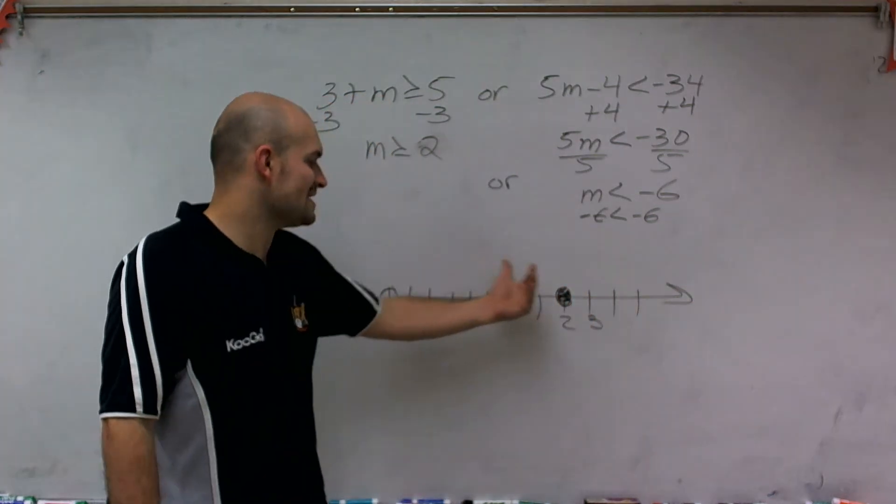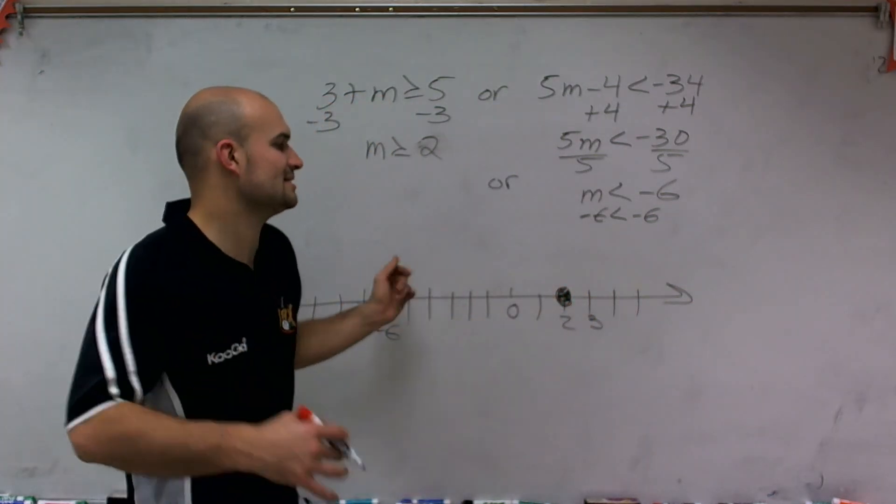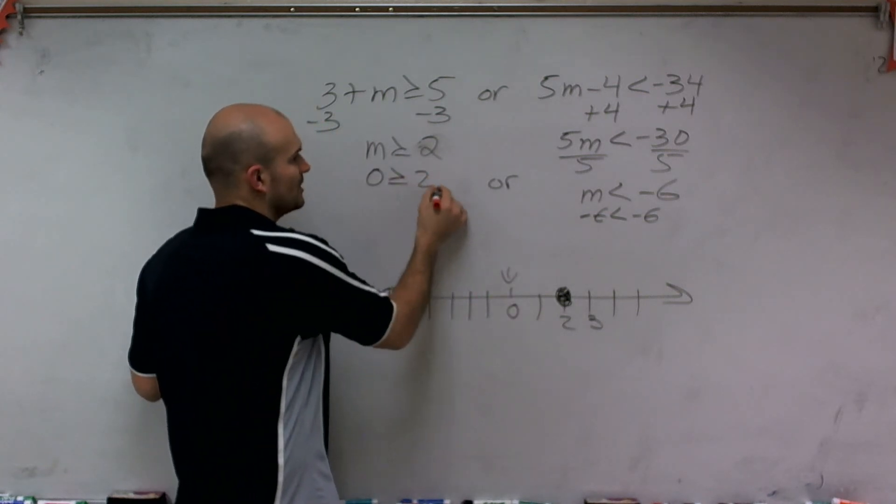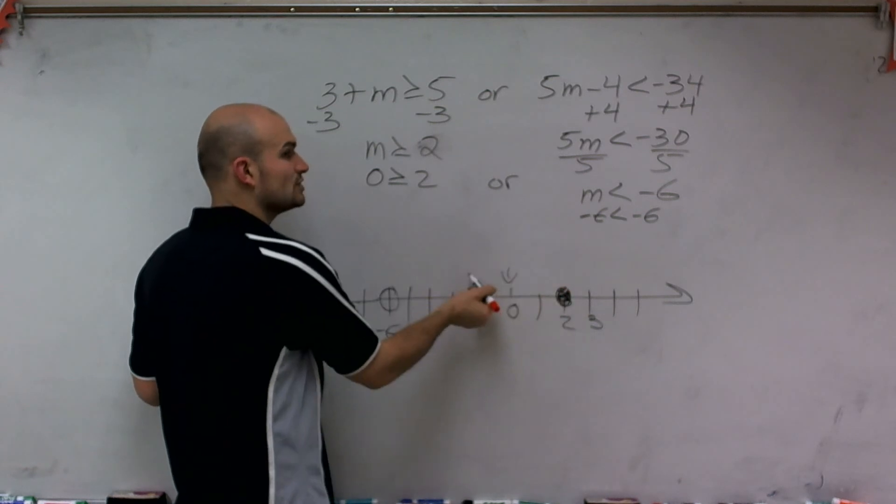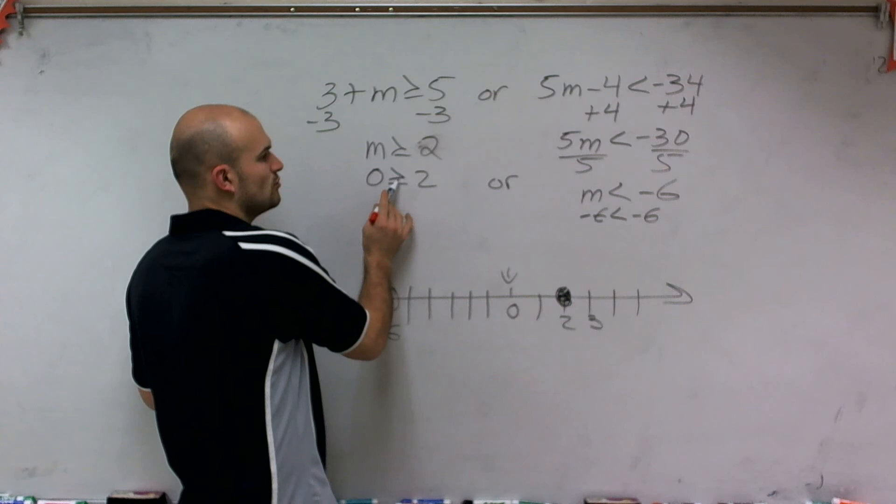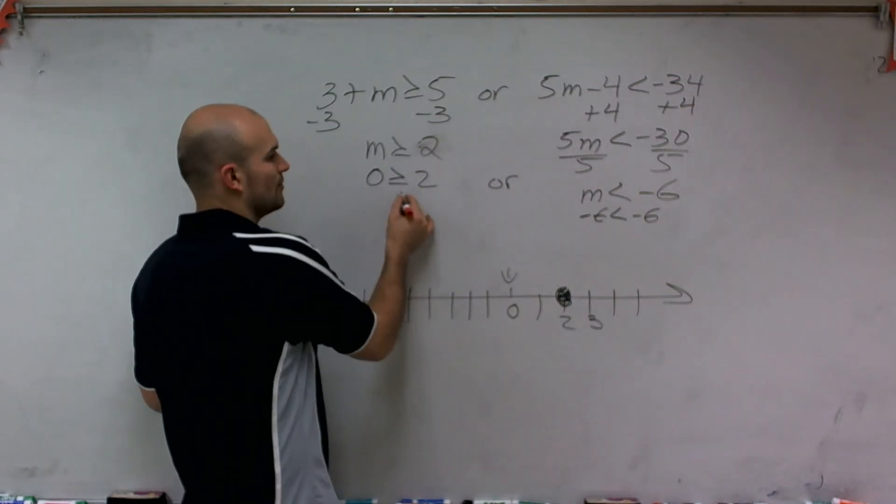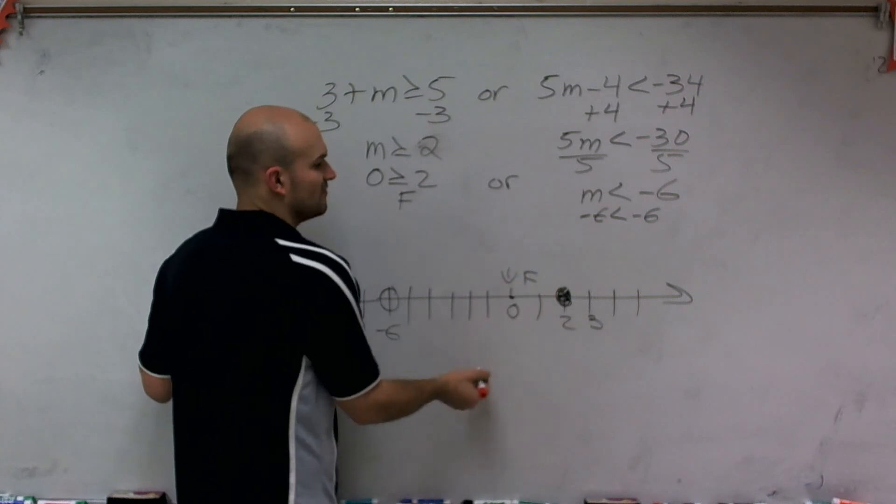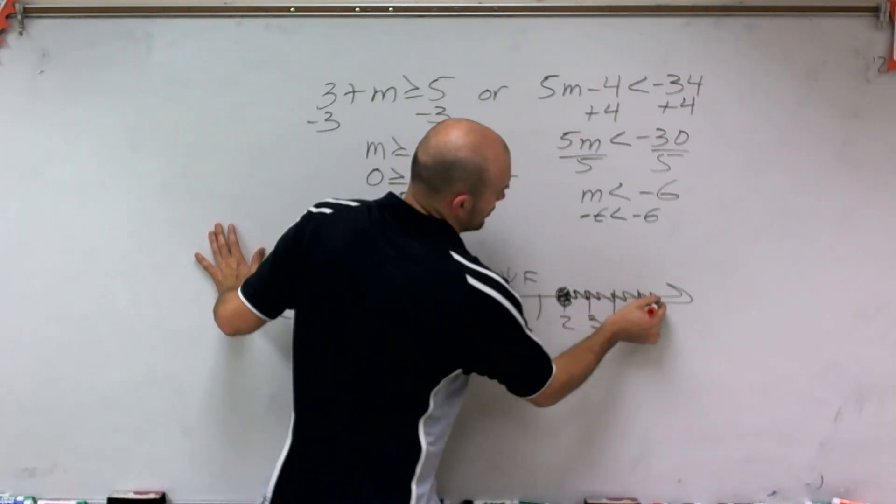Less than is going to be to the left. But what I like to do is just pick a test point. And if your test point, let's do 0. If your test point is true, you shade towards your test point. If it's false, you shade away. So is 0 greater than or equal to 2? No. That's false. Therefore, this test point for this inequality is false. So I'm going to shade away.